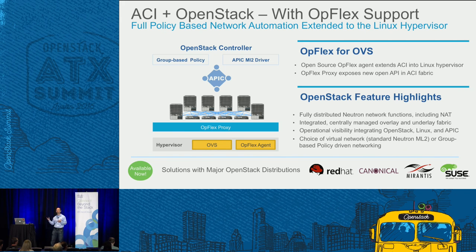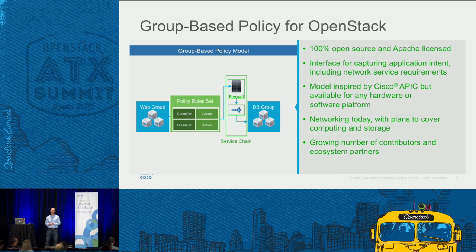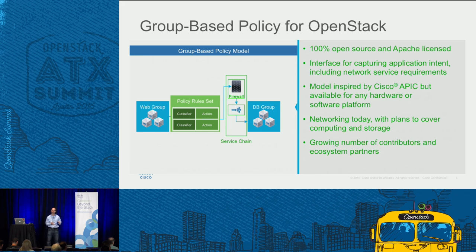Using these components we offer a fully distributed neutron networking solution handling Layer 2 and Layer 3 networking, distributed DHCP, and distributed metadata services critical in the OpenStack environment — with all the visibility ACI can offer, correlated back to your OpenStack environment. ACI is now acting as an operations panel for OpenStack. One key area of community contribution we focused on is around group-based policy.